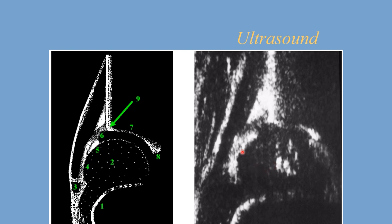A common question is how to be certain a structure is the labrum. There are three features that help: first, the labrum always rests on the femoral head; second, the labrum is always inside the capsule, with a bit of shadow between them; and third, the labrum is always distal to the cartilaginous roof. If all three criteria are met, you can be confident you have identified the labrum.